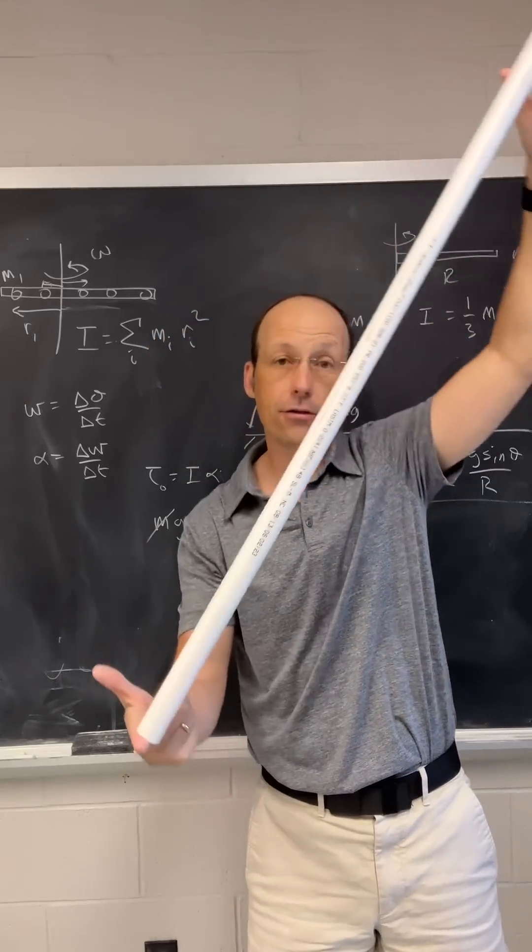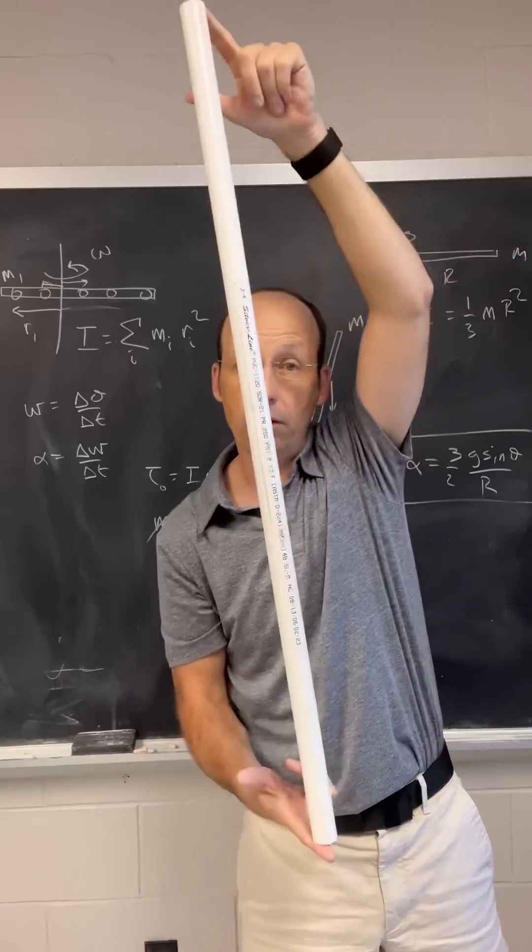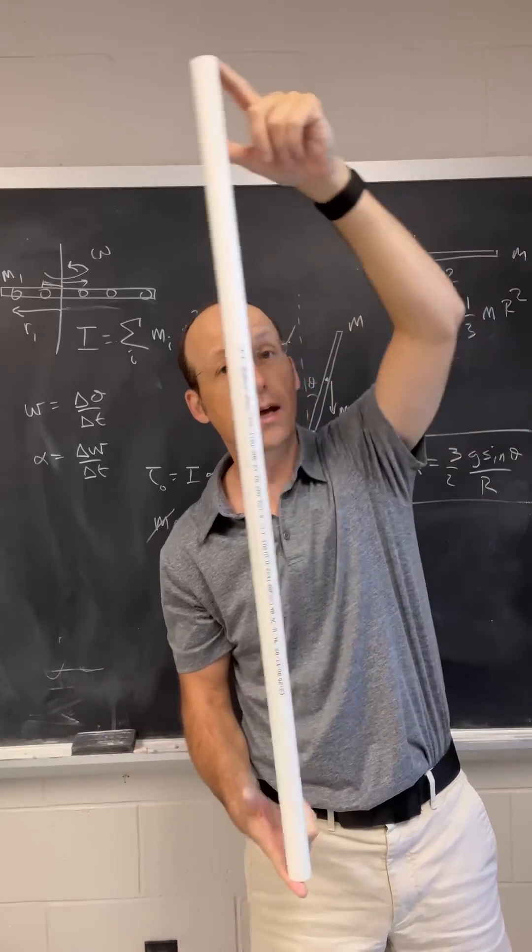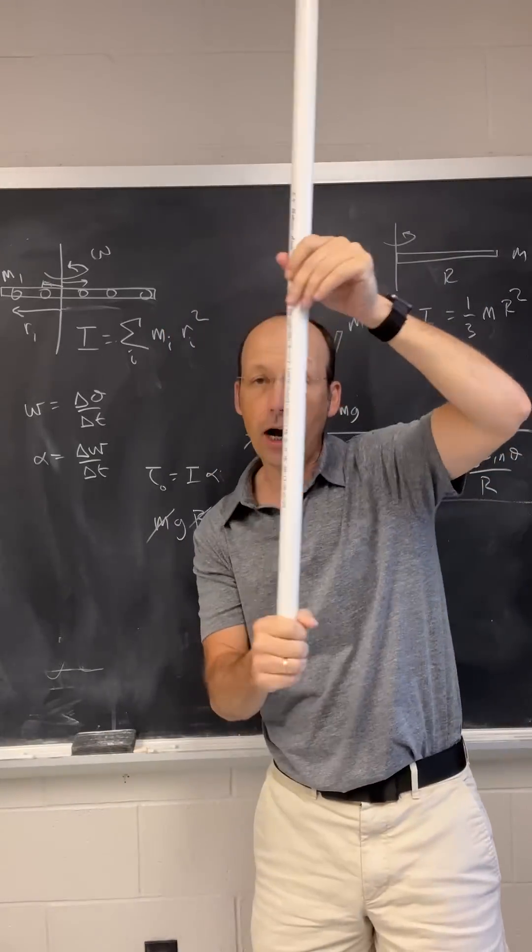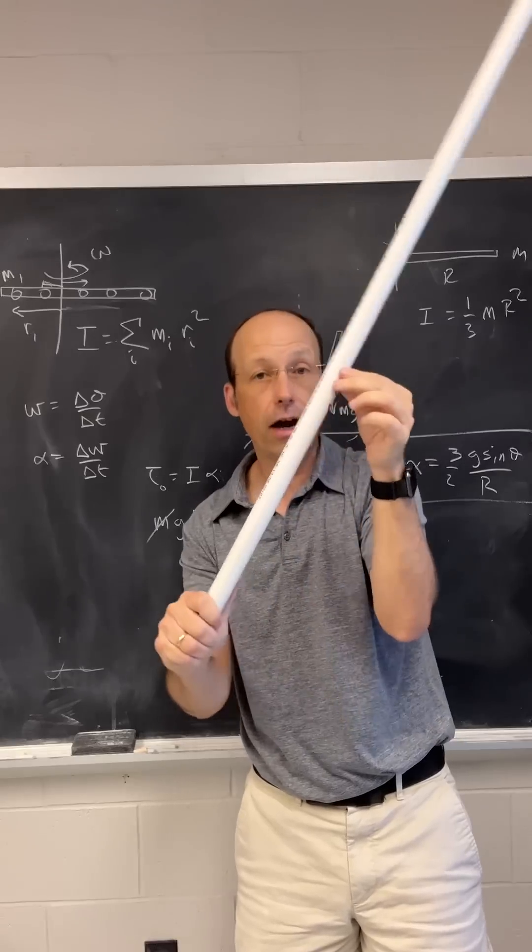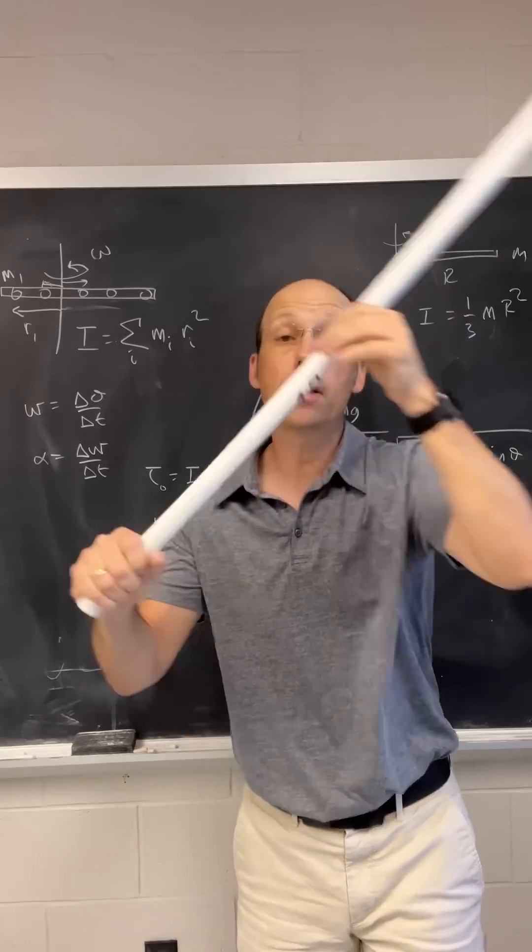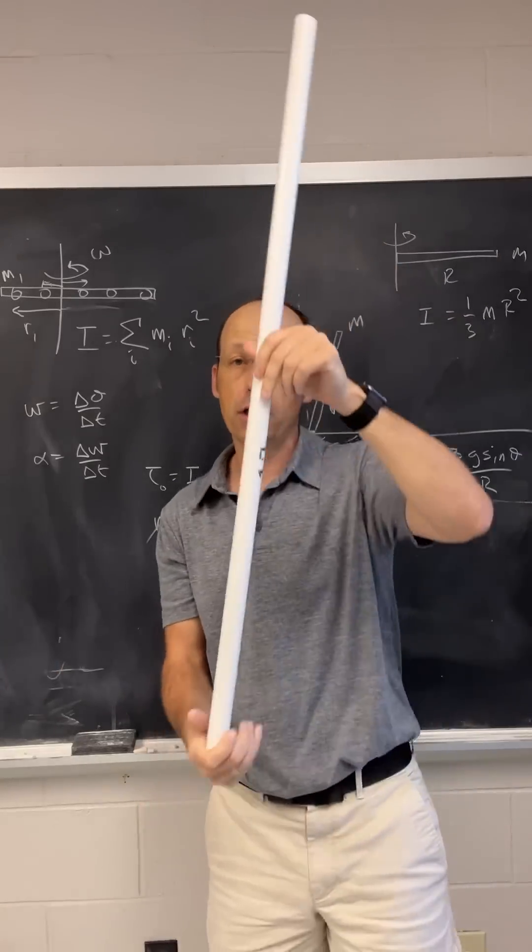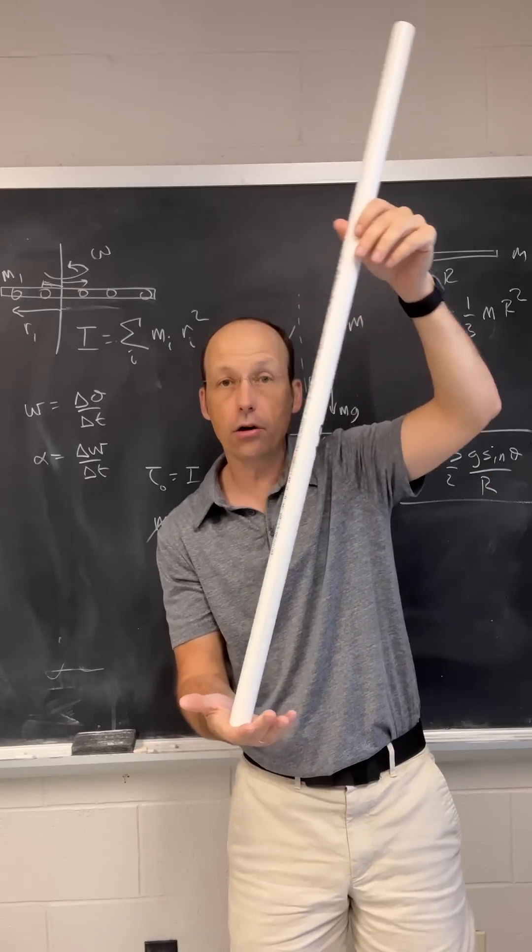But the property that makes it want to rotate over, which we call torque, also depends on the length. But they don't actually cancel. So longer objects have a greater gravitational torque pulling them over, but even more moment of inertia. So longer objects take longer to tip over.